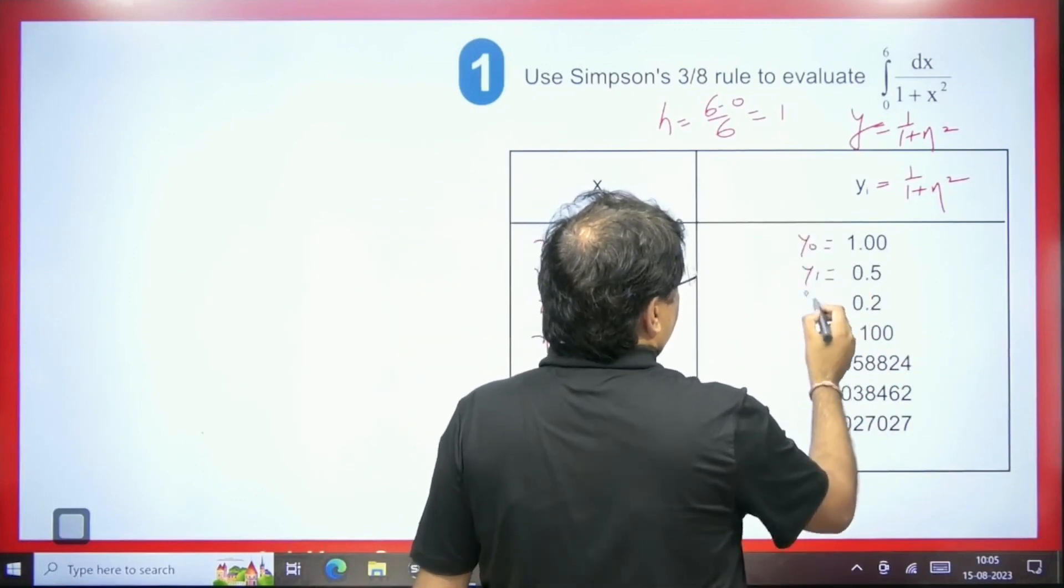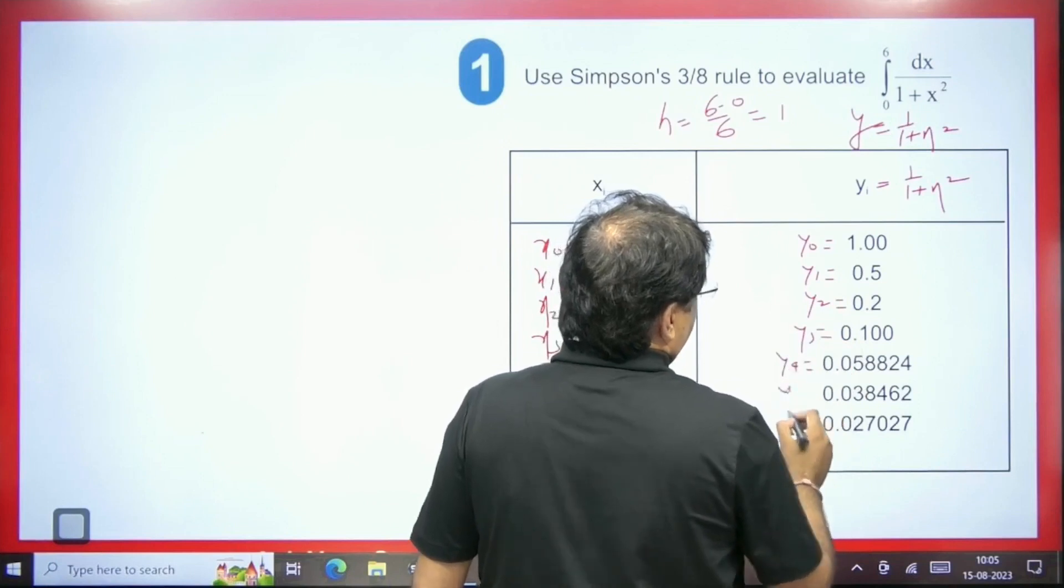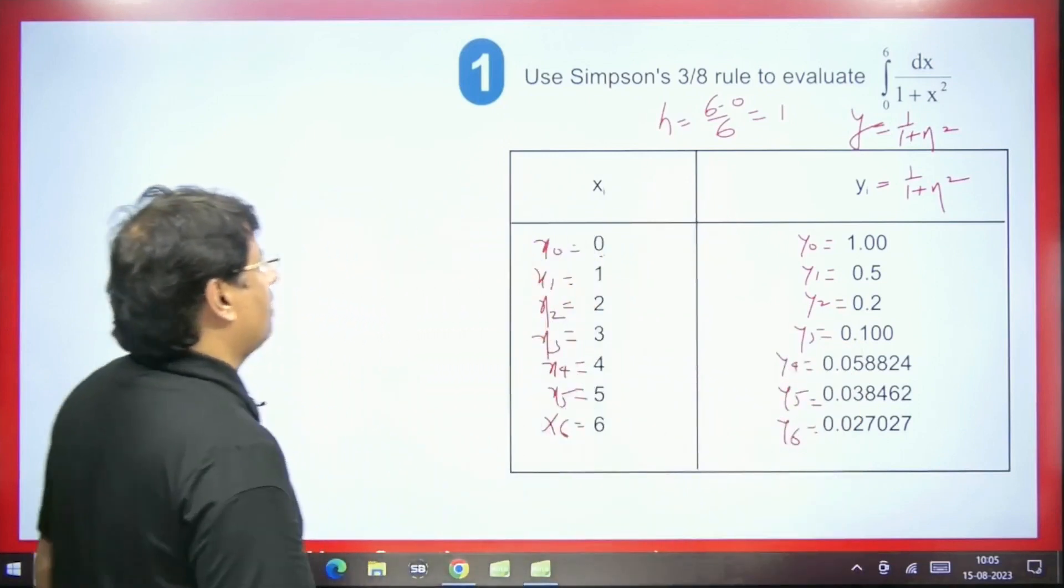So what will we get here? We will get y0, y1, then y2, y3 and y4, y5 and y6. So like this, we will have its value here. Now we will use the formula.